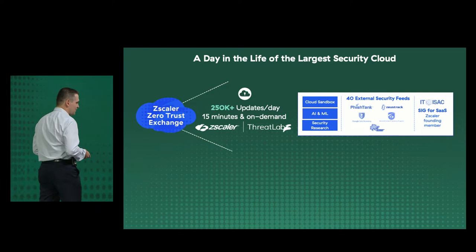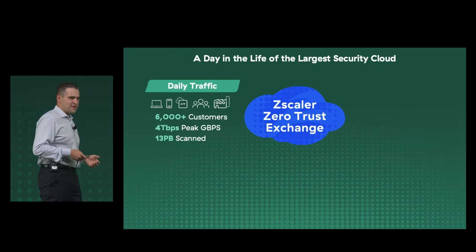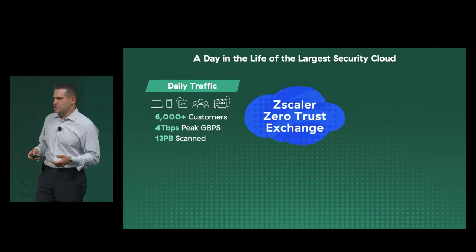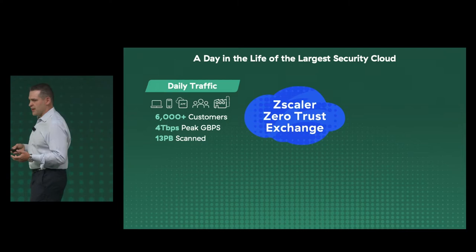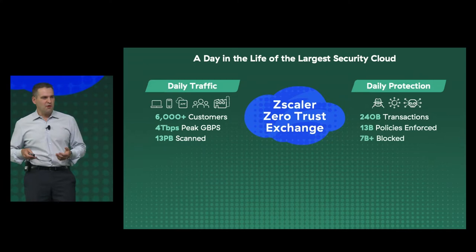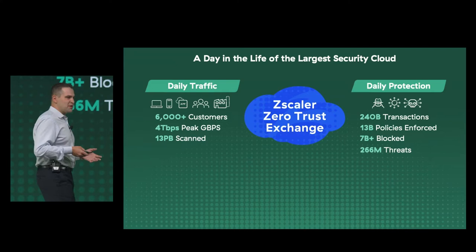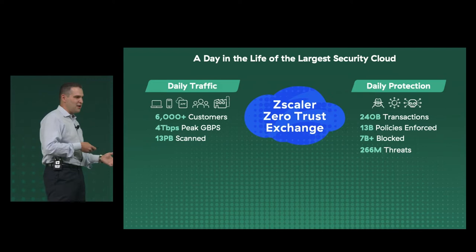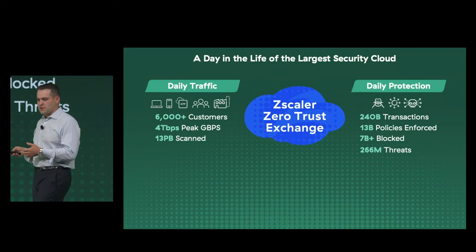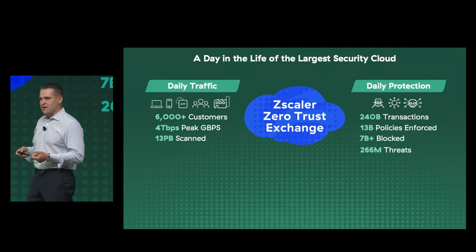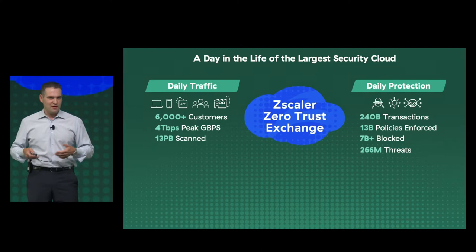Looking at what a day in the life of Zscaler looks like: it's 6,000 unique organizations, tens of millions of users, resulting in about 4 terabits of traffic at peak per day and 13 petabytes of scanned data. Those transactions result in 13 billion enforcements, 7 billion blocks — things that policy didn't catch, something from AI/ML, or some new threat we've detected — and 266 million threats that could potentially compromise a customer's machine. So it's something really dangerous.